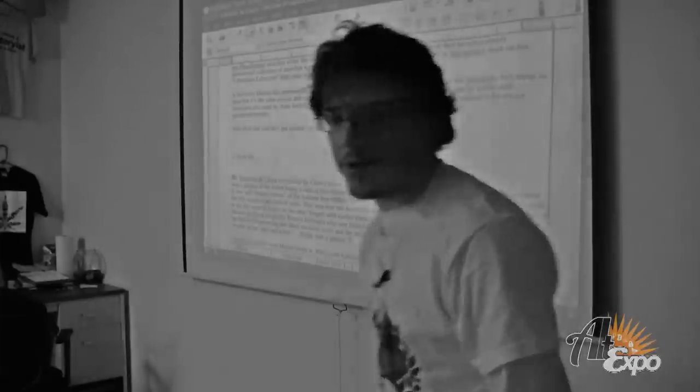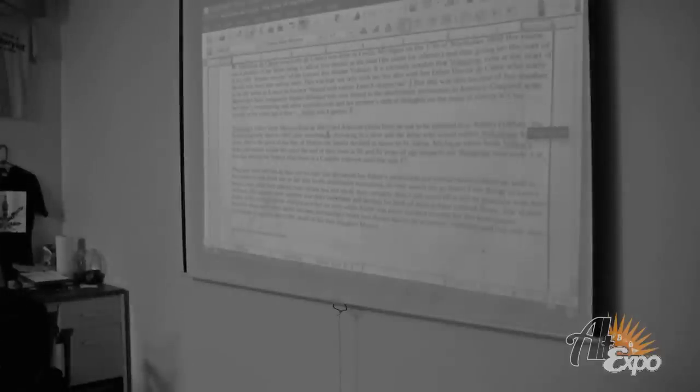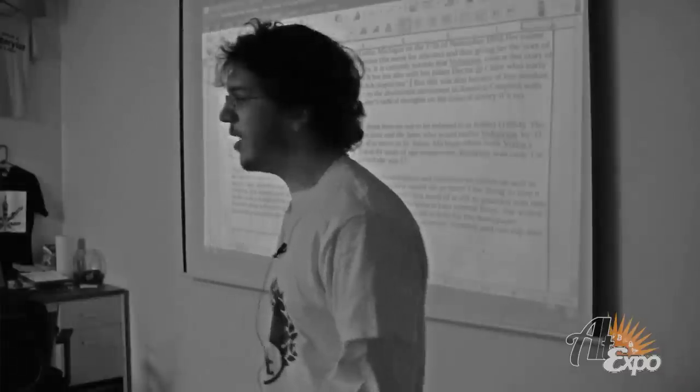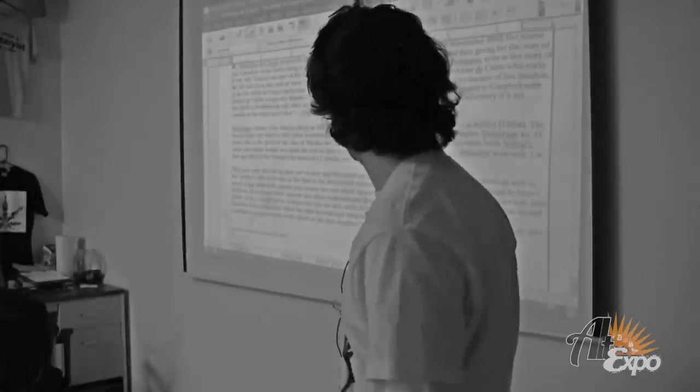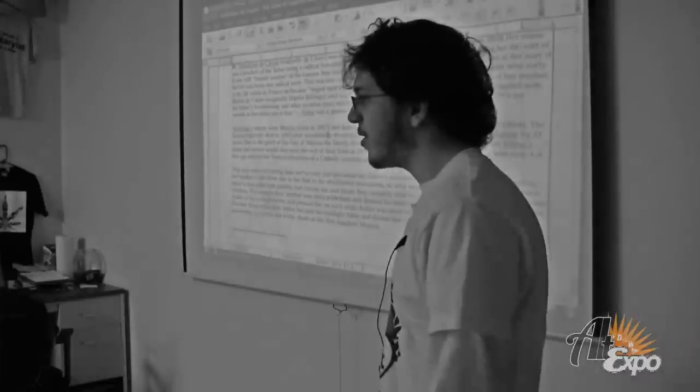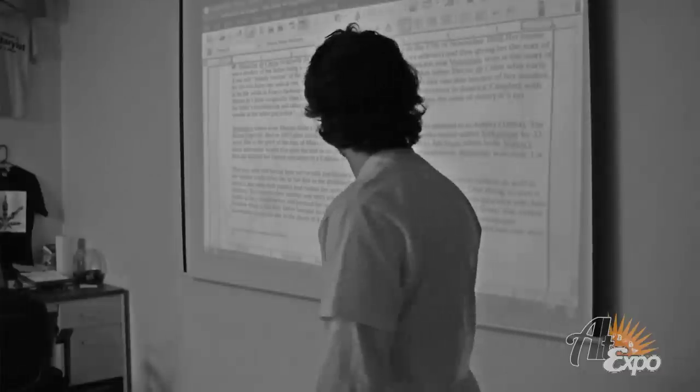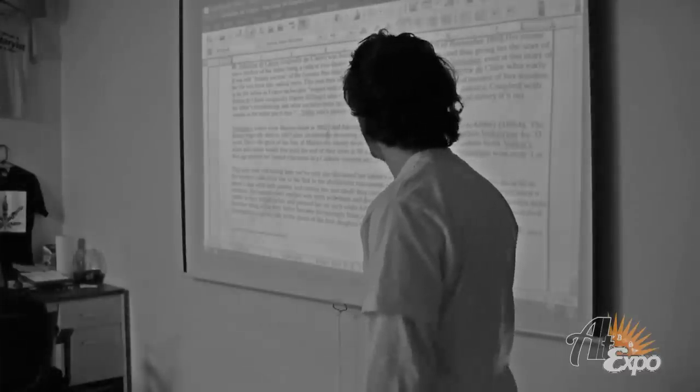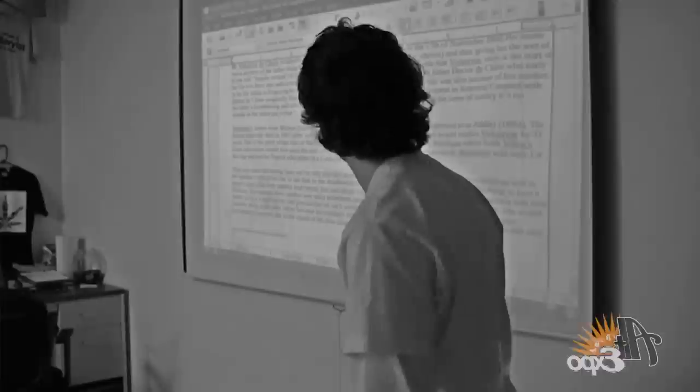I'm going to start with her early life. Voltairine de Cleyre, originally spelled D-E-C-L-A-I-R-E, was born in Leslie, Michigan on November 17th, 1866. Her name was a product of her father being a freethinker and socialist, originally born in France. She was basically the female version of Voltaire.